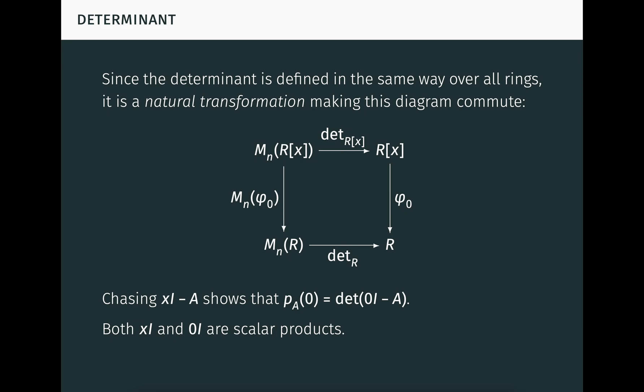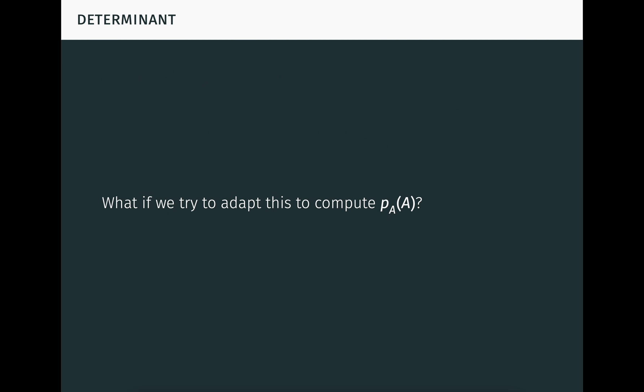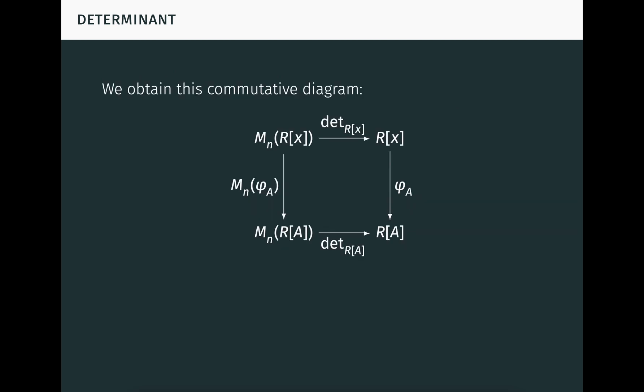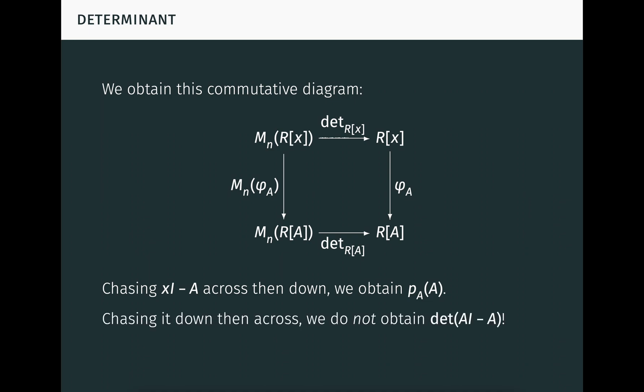Importantly, when going down then right, we get the determinant of zero I minus A, because both xI and zero I represent scalar products. The elements x and zero are multiplied by each element of the matrix I in these products. What if we try to adapt this to compute P_A of A? When we do, we obtain this commutative diagram. This time, chasing the characteristic matrix across then down, we obtain P_A of A. But chasing it down then across, we do not obtain the determinant of AI minus A. And there's no way we could.